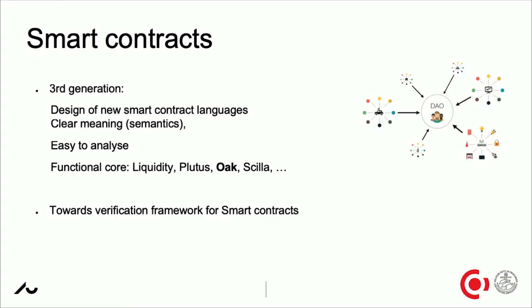The DAO example shows it's extremely hard to write such contracts in basically JavaScript, which was used for Ethereum — you just make mistakes. These mistakes can be avoided by using a more mature, modern programming language. Many projects — Tezos, Cardano, Concordium, Zilliqa — are all moving towards new programming languages, typically functional programming languages. These are much easier to understand, reason about, and analyze. You could compute how much gas you need to run a contract, and they have a very clear meaning — making it much easier to avoid big accidents.